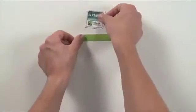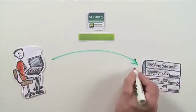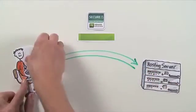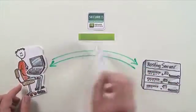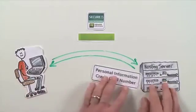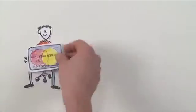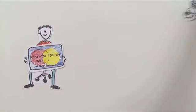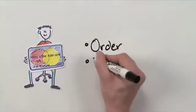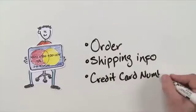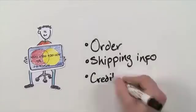Once the computers agree on the method they're going to use, data starts to flow back and forth between them. When data leaves one computer, it's scrambled using the agreed upon method, and then de-scrambled when it arrives at the other computer. Now Todd can place his order using a credit card, and no matter who tries to interfere, the order, shipping information, and credit card number go to Benzels Pencils and nowhere else. So let's review.